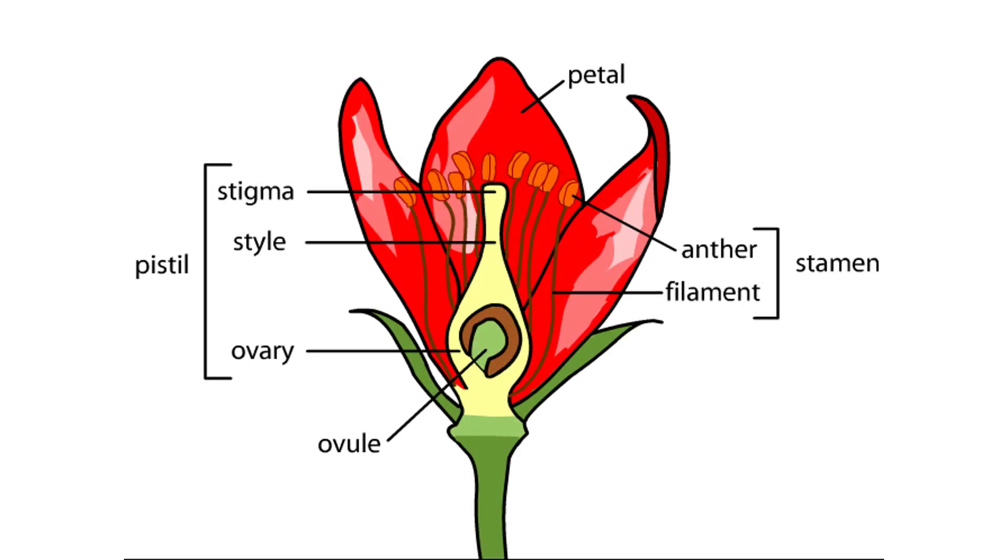Flowering plants undergo an unusual reproductive process in which there are two fertilization events rather than just one. This double fertilization takes place between cells produced in the male reproductive organs, the anthers, and the female reproductive organ, the ovule.